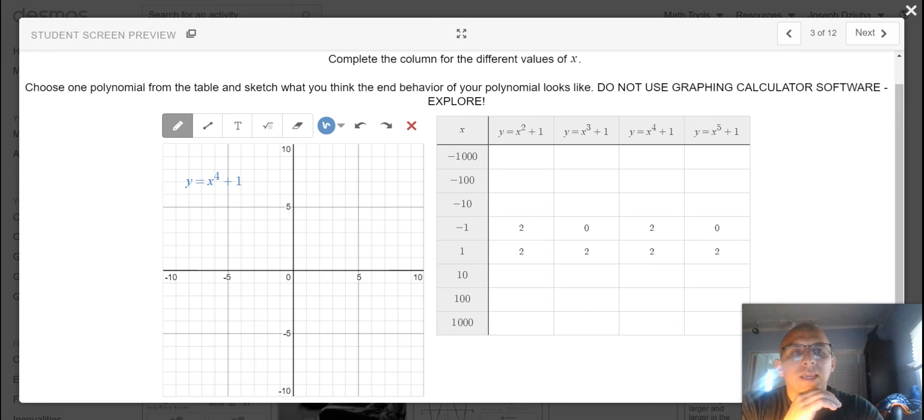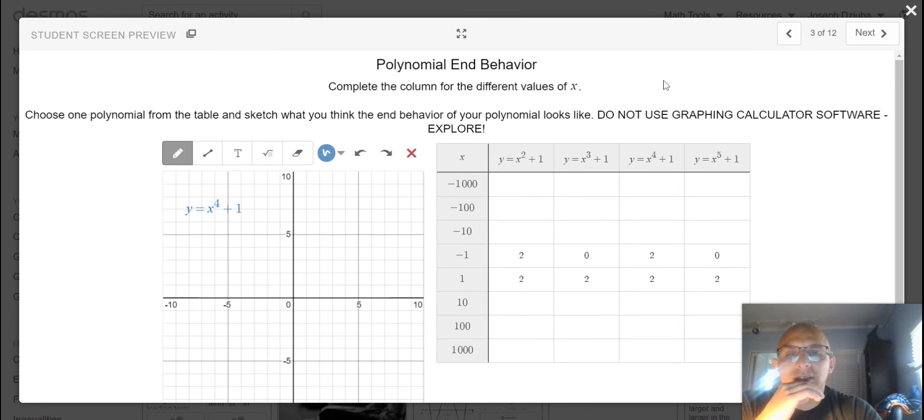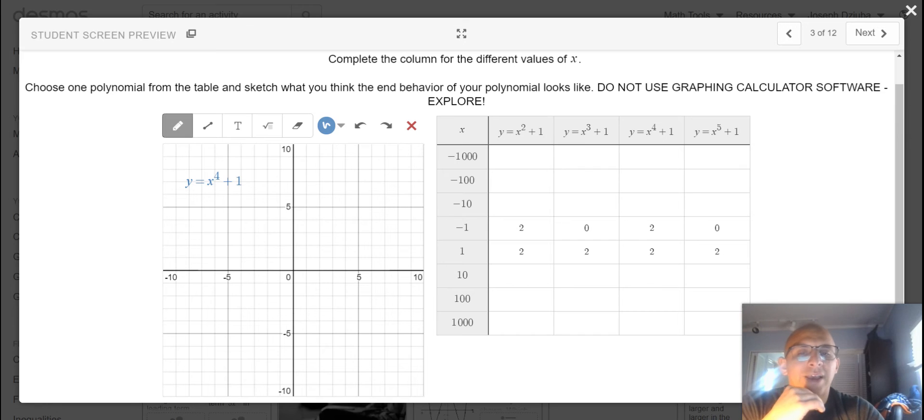This idea of end behavior involves this idea of using values of x that are extremely large. So here our table is capped at both negative one thousand and one thousand, values that you can definitely make an argument are large.